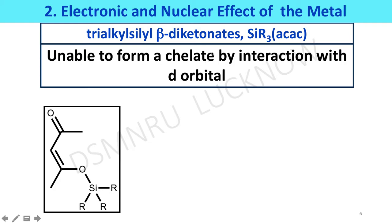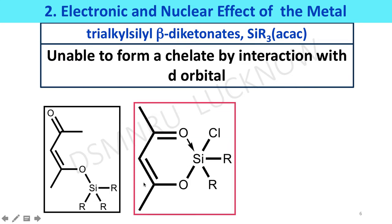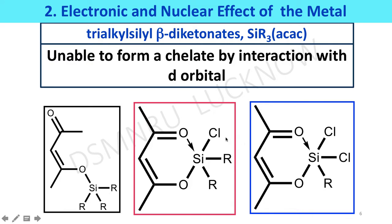For example, trialkyl silyl beta-diketone can form a chelate, but it does not do so because the oxygen does not make a chelate with this trialkyl beta-diketone. But if one or two alkyl groups on silicon are replaced with halogen like chlorine, then chelation occurs. Chelate formation takes place because the halogen increases the Lewis acid property of the silicon atom in both molecules, so silicon achieves a slightly positive charge, enabling interaction with the second oxygen of the acetylacetone in the molecule.